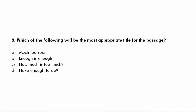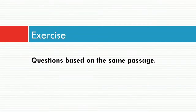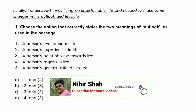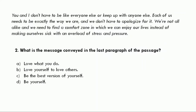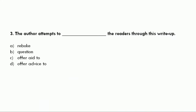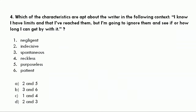The last question, Question 8: Which of the following will be the most appropriate title for the passage? Option C is the correct answer, as it brings out the true meaning — deciding the extreme limits of our comfort zone to lead a balanced life. I hope you are now clear on how to solve this type of question. Now I am giving you an exercise to practice from this passage. Question 1: Choose the option that correctly states the two meanings of 'outlook' as used in the passage. Question 2: What is the message conveyed in the last paragraph — love what you do, love yourself to love others, be the best version of yourself, or be yourself? Question 3: The author attempts to do what to the readers — rebuke, question, or offer aid to? Question 4: Which characteristics are apt about the writer who says, 'I know I have limits and that I have reached them, but I am going to ignore them and see for how long I can get by.' Please write your answers in the comment section.